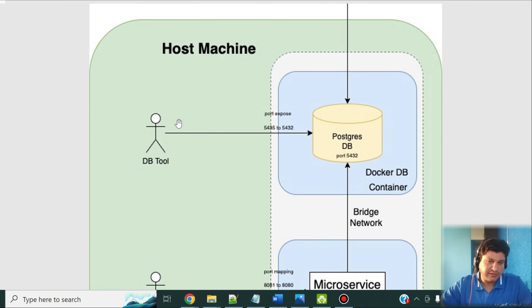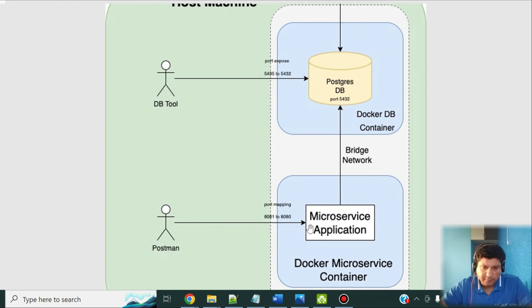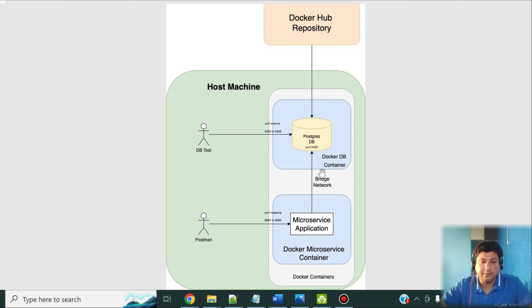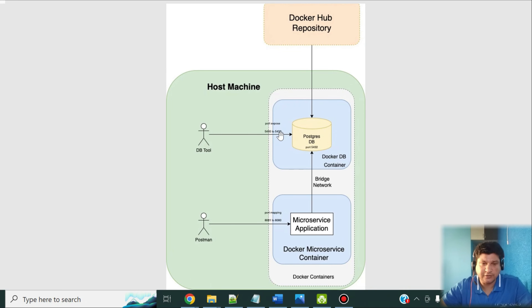That port mapping is required because external applications will hit the host port, which is mapped to port 5432 of the container port — that is how the database is accessible outside the container. In the second container, I'll be running my microservice application. The Spring Boot microservice runs on port 8080 inside the container, but we access it on port 8081 outside. Communication between the two containers happens through a bridge network, and within the bridge network they can access each other directly on their container ports — so the microservice in container 2 can reach the database in container 1 on port 5432.